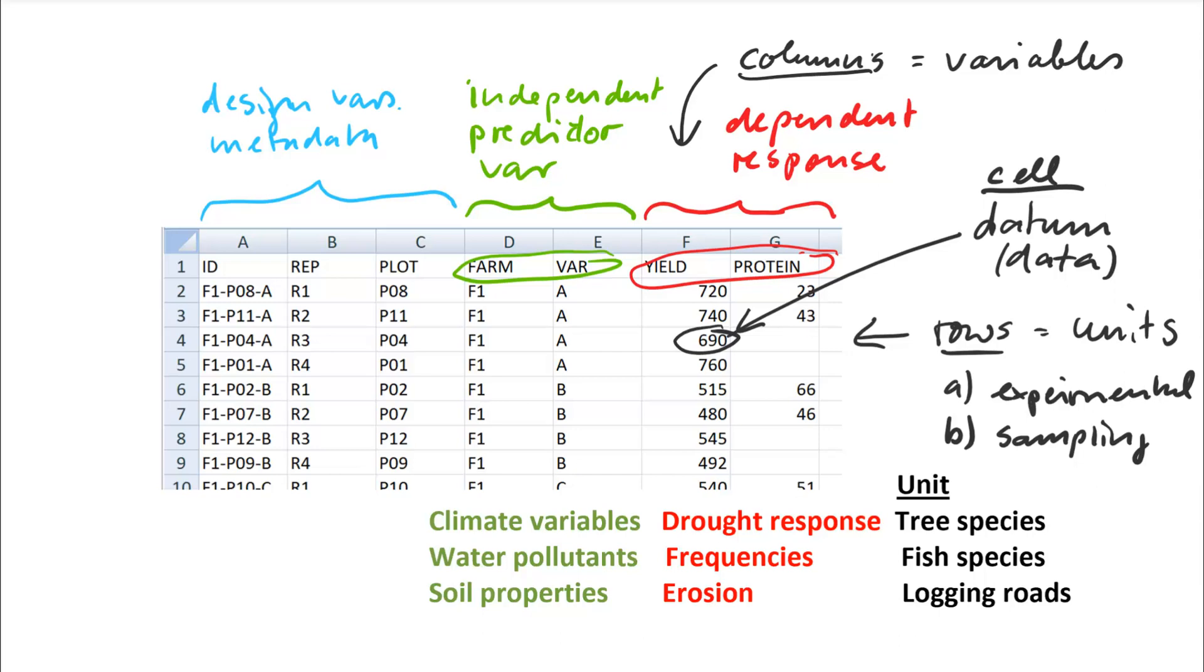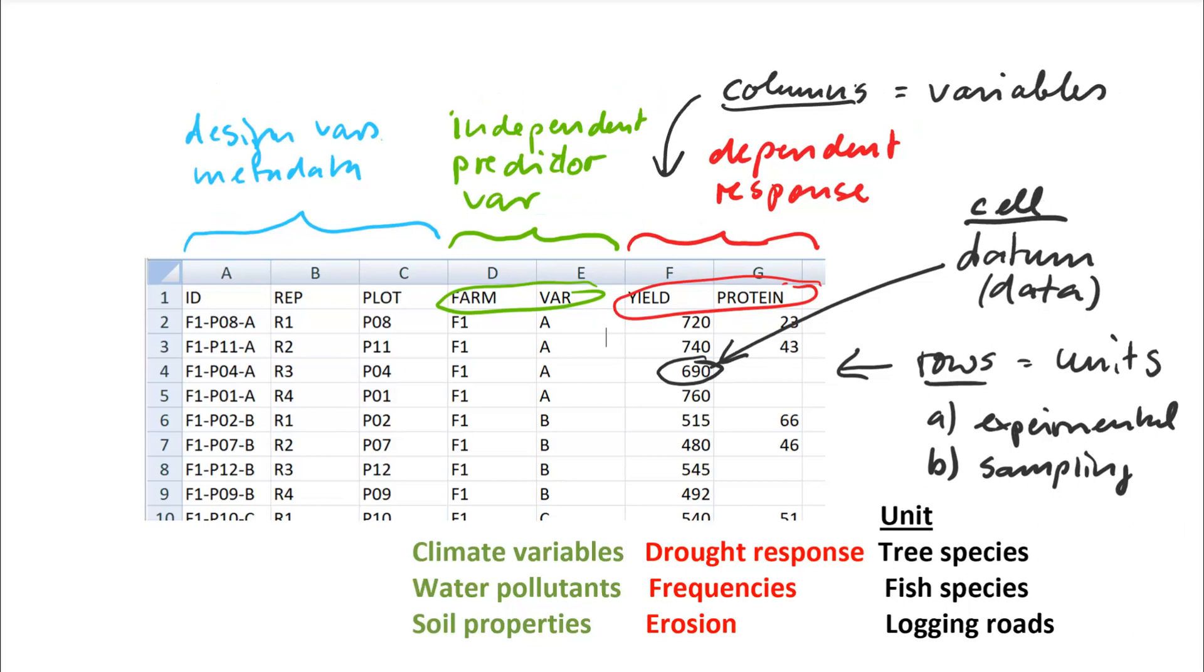So what you should be familiar with now is how to properly enter a data table, what the different variable categories are, how they relate to your experimental design. And you can also see that that's a universal format. So whatever kind of science you do, the data tables that you work with will look like that. And that is also helpful, because once you understand it, you can work with anybody's data. And this consistency is also helpful for the programmers that develop software, so they assume this arrangement of your data.